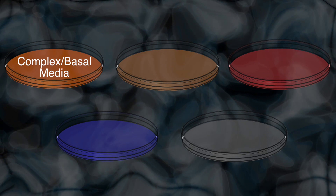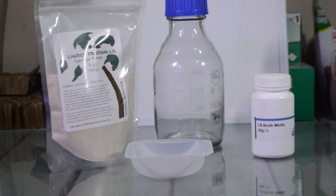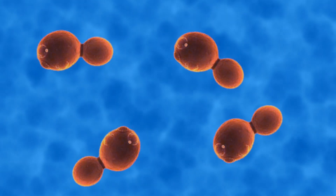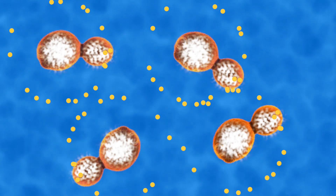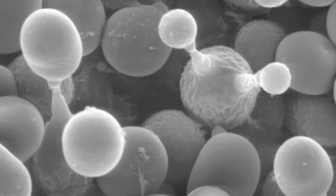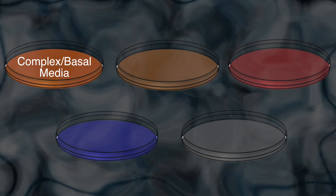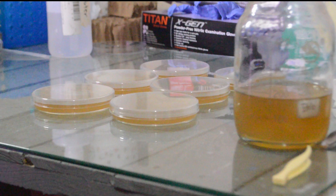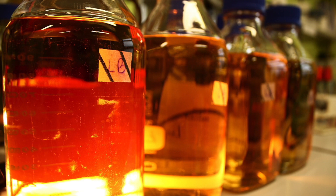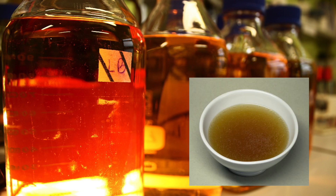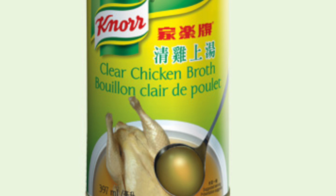The first is basal media, sometimes called complex media or simply culture media. The most common version is called LB, or lysogenic broth, sometimes also called Lenox broth. As the name implies, this is made by taking cells and lysing them open to release their contents. Manufacturers usually use yeast as it's plentiful and easy to grow in large quantities and contains almost all the nutrients many microorganisms need. This media is called complex because the exact concentration of nutrients varies from batch to batch. It comes in liquid form called broth — very similar to a soup broth — and in fact canned chicken broth will often work just as well.